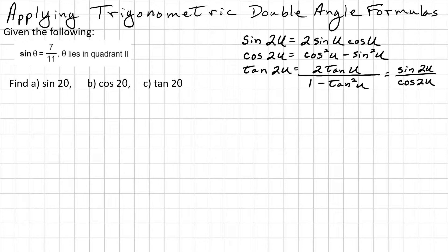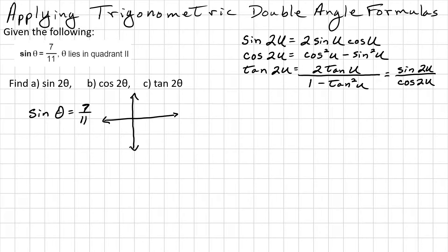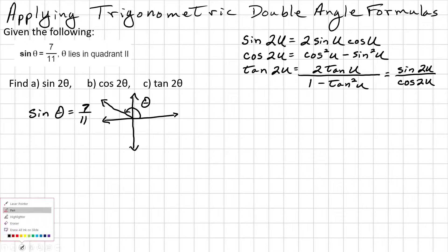First off, we need to determine what we're working with. We know that the sine of theta is equal to 7 over 11, and it lies in the second quadrant. In the second quadrant it looks like this — theta is this angle. We can use a right triangle with x, y, and r.